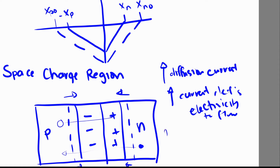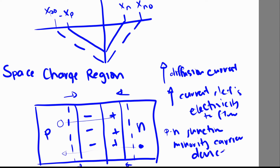So our P-N junctions are actually minority carrier devices. By that we mean our current is produced by the movement of minority carriers — the movement of electrons on the P side and holes on the N side, which are minority carriers.